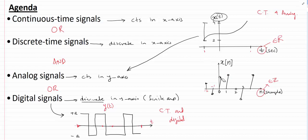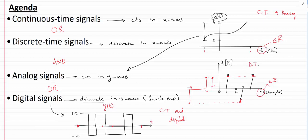Now x of n is discrete time because it is only defined at discrete levels of time, and the amplitude is also finite — the possible values of amplitude are just 1 and minus 1. So this is an example of a discrete time and digital signal.